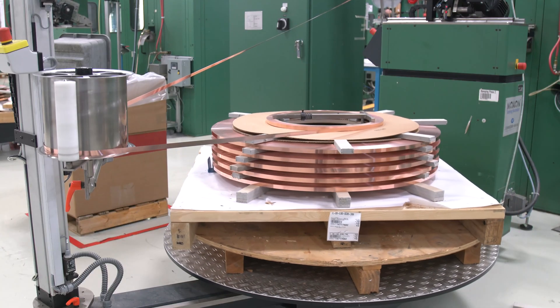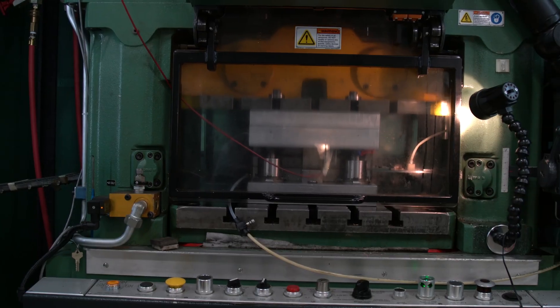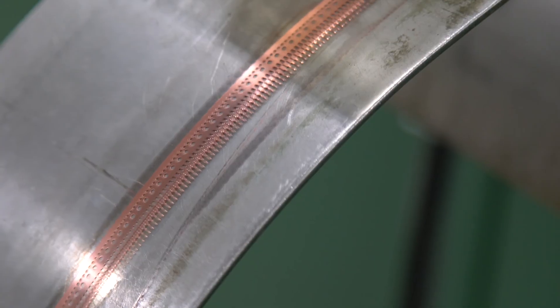The next stop on the tour is stamping. It's where we make the metal contacts and pins in our products. One of the unique things you'll see in stamping is the sheer speed of it. In the stamping process, you might be stamping contacts at a thousand parts a minute.